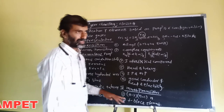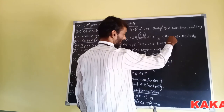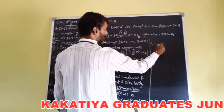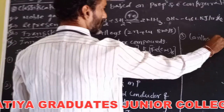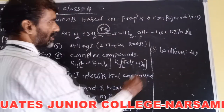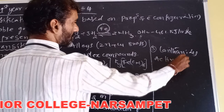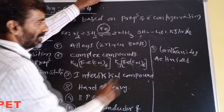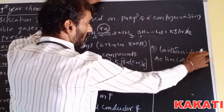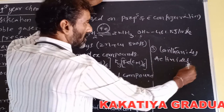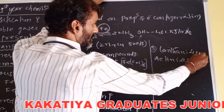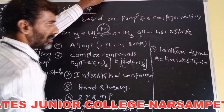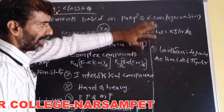This type includes lanthanides and actinides. Lanthanides range from cerium to lutetium, and actinides range from thorium to lawrencium.